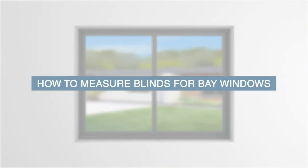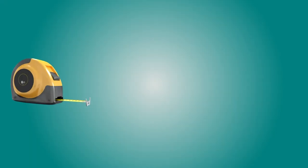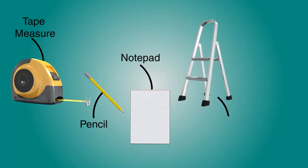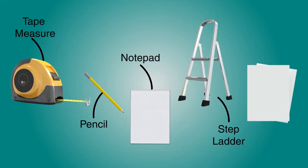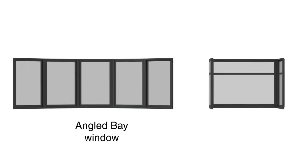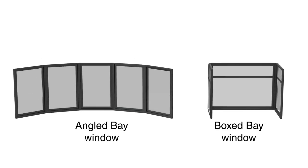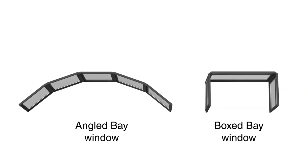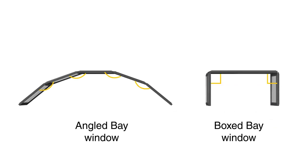For those with bay windows, we've got you covered as well. In addition to the tape measure, pencil, notepad and stepladder, you'll need two sheets of A4 size paper. Measuring blinds for a bay window, be it angled or 90 degree box, is a tad tricky. You can't just measure the width as you did for a traditional window.